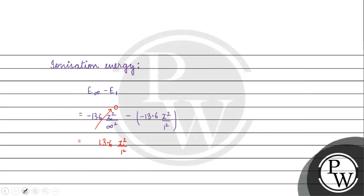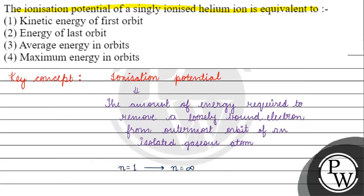The correct answer for this question will be option first. The ionization potential of a singly ionized helium atom is equal to the kinetic energy of first orbit. I hope you understood it well, thank you and all the best.